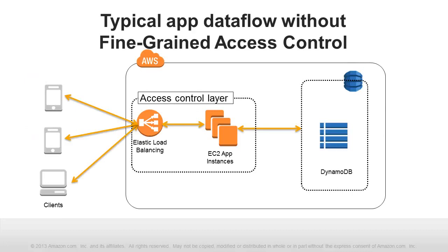Here's a diagram of how access control works in a mobile application which stores its data in DynamoDB but was implemented without fine-grained access control. Clients send data requests to a middle-tier proxy service, typically implemented in Amazon Elastic Compute Cloud instances. Elastic load balancers sit in front of these instances to ensure high availability. The middle-tier manages access control for all client requests. Developing this proxy adds to the burden both of building a new application and of maintaining and scaling it.